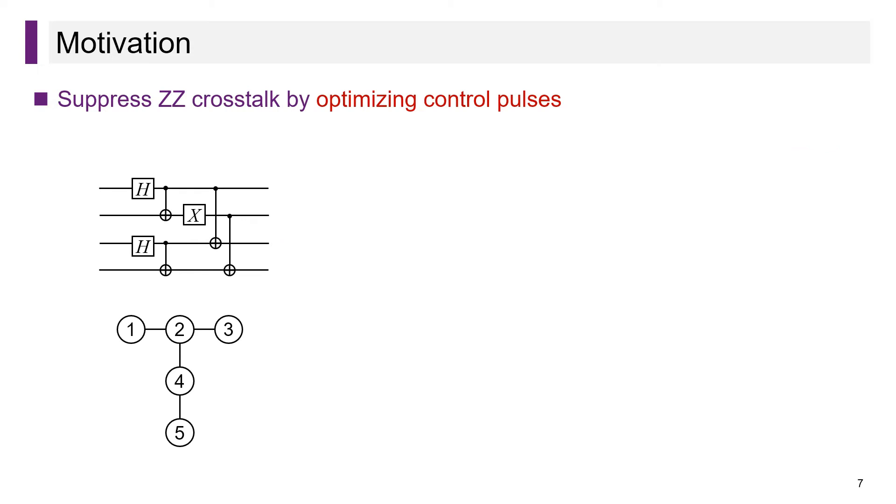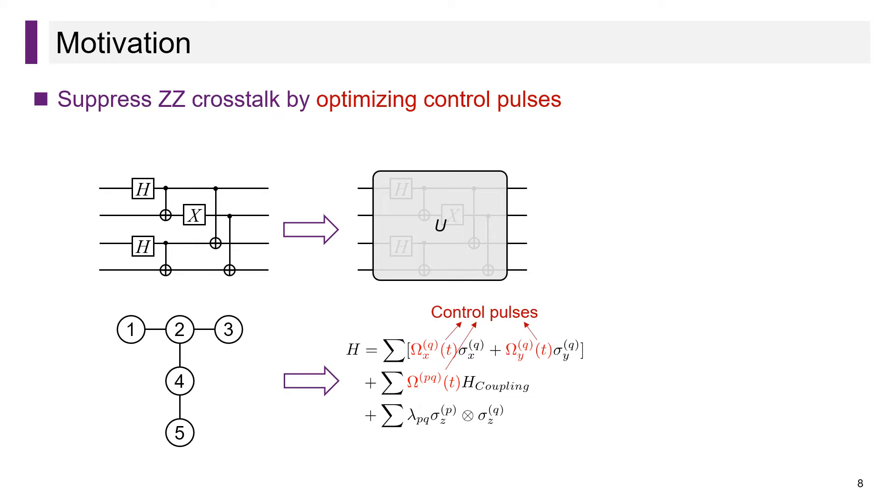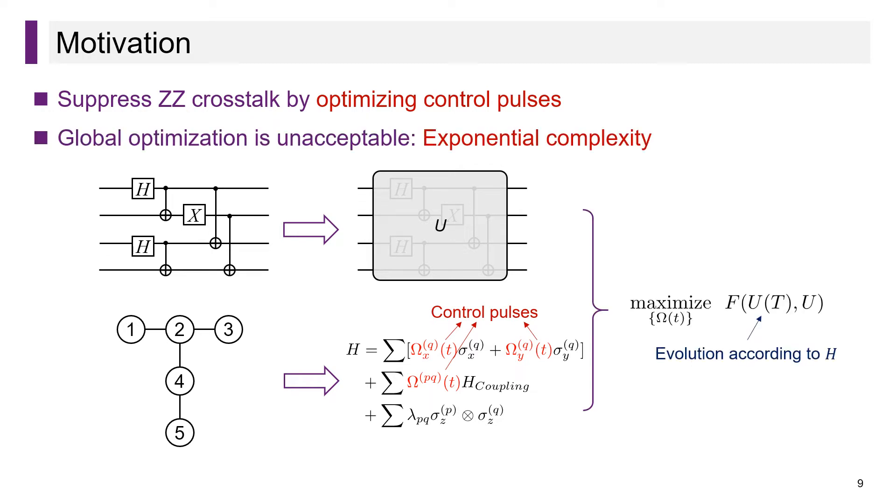More precisely, we aim to execute a circuit on a quantum computer. The whole circuit can be regarded as performing a unitary operation U, and the computer can be modeled by its Hamiltonian where omega(t) are control pulses. We can optimize these pulses globally by maximizing the fidelity between the evolution U(T) of the computer and the target operation U of the circuit. However, as the time for pulse optimization is exponential in the number of qubits, this kind of global optimization is unacceptable for large circuits.